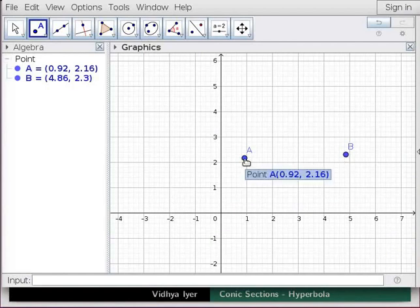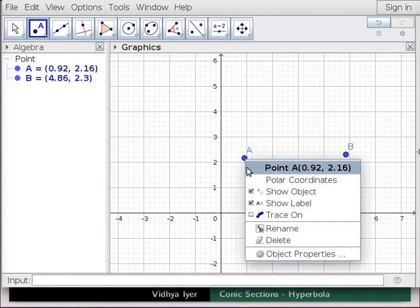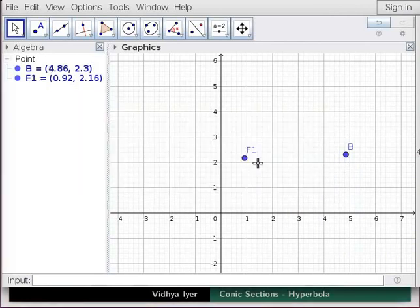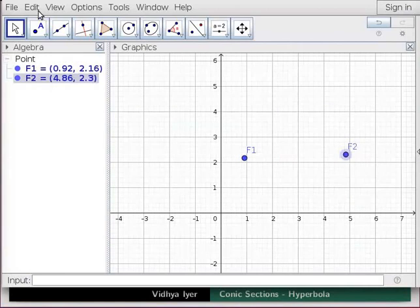Right click on A and choose the Rename option. In the new name field type F1 and click OK. This will be one of our foci F1. Let us rename Point B as F2.